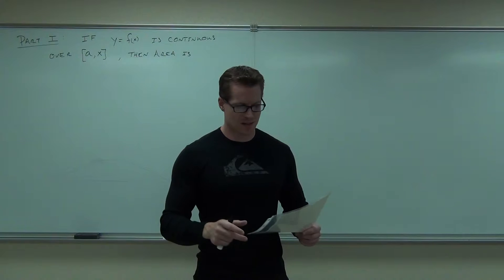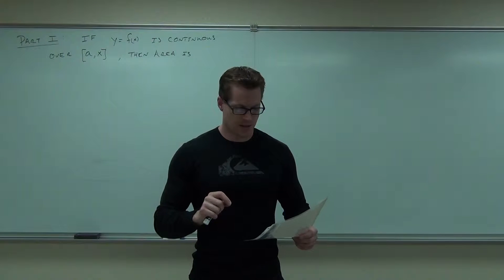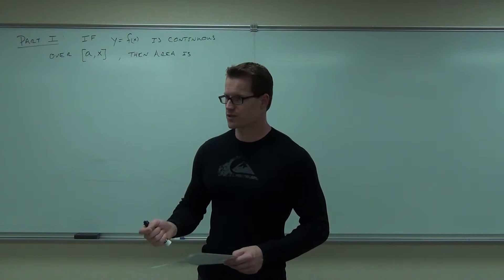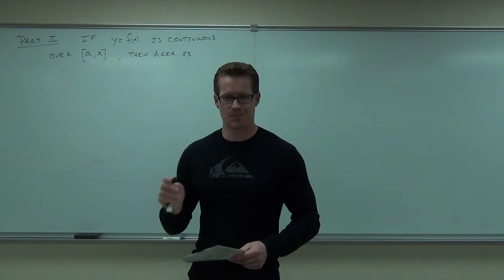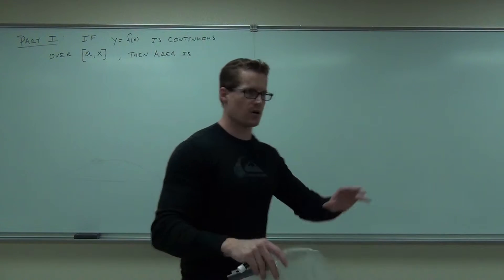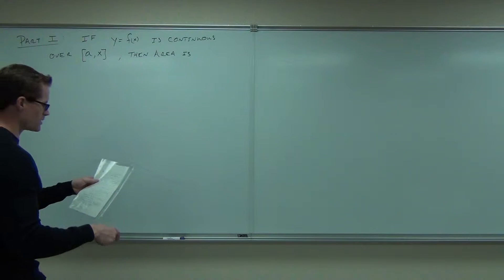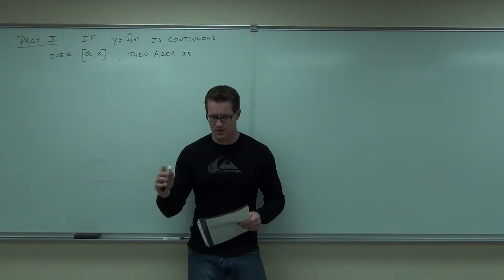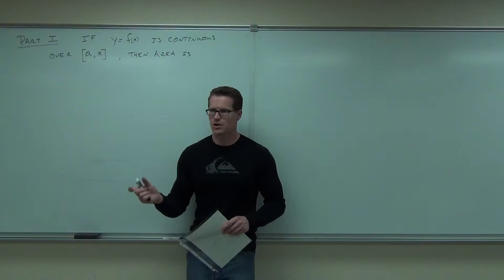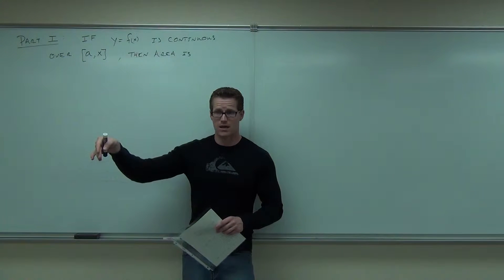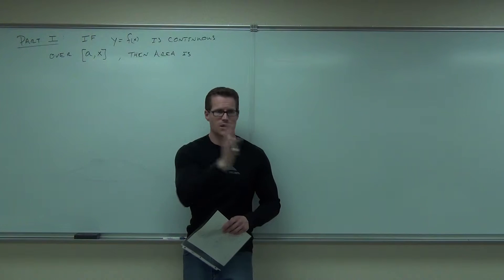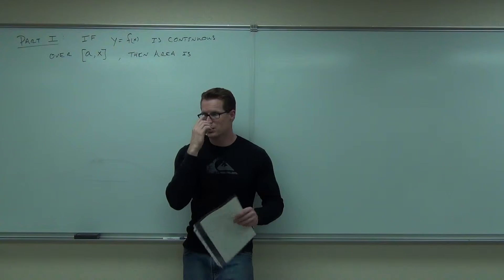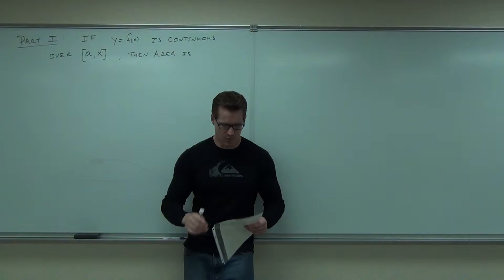The part one basically says this: it says that derivatives and integrals are inverses. It says one undoes the other. So let's suppose we have this function, y equals f of x, some function, and it's continuous over a certain interval. Starts at A, a point, and ends wherever we want. Ends at some x down the way. Some x, even changeable, provided it's continuous up to that point.